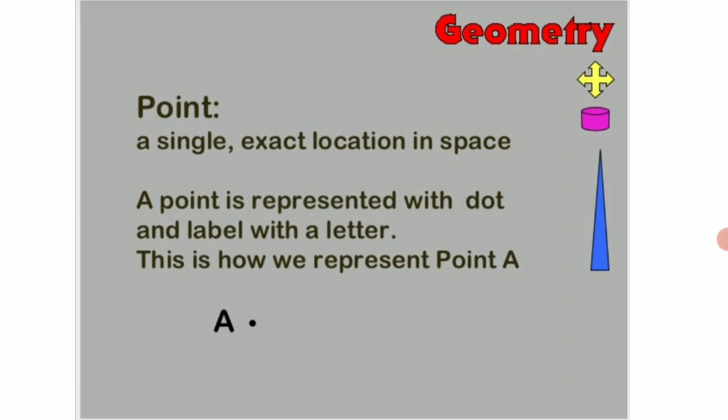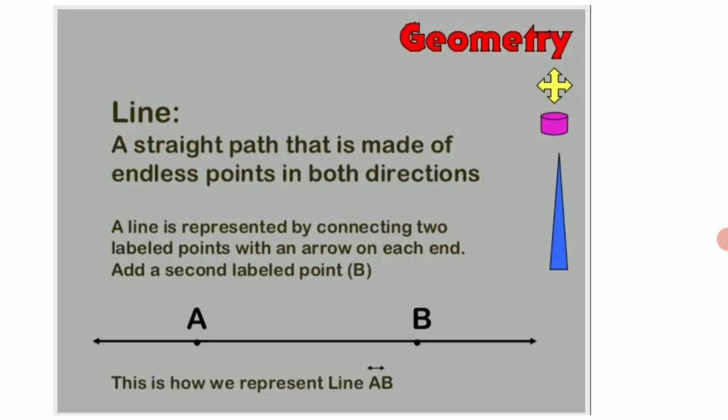What is a point? Let us first discuss children. A point is a single exact location in space and a point is represented with a dot and labelled with a letter. This is how we represent a point. Here children, you can see below a dot is being given that is said to be a point and being represented by capital letter A.